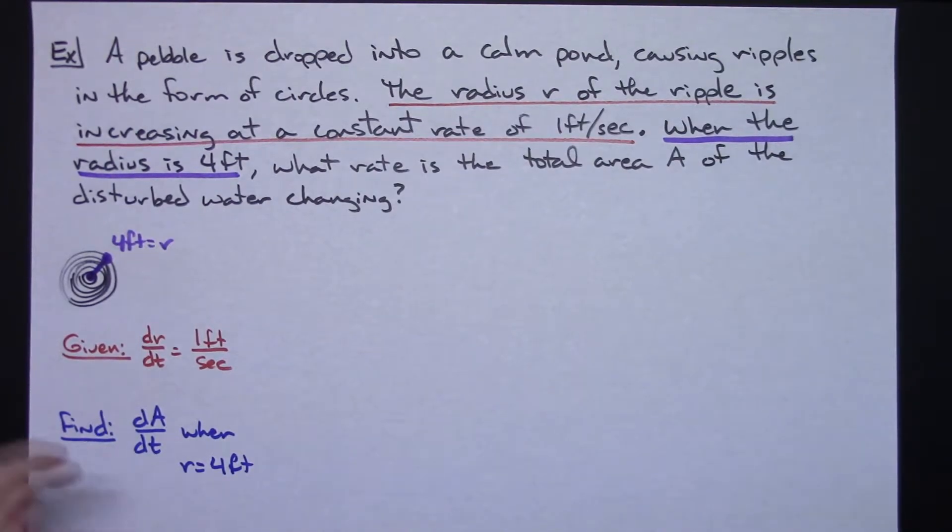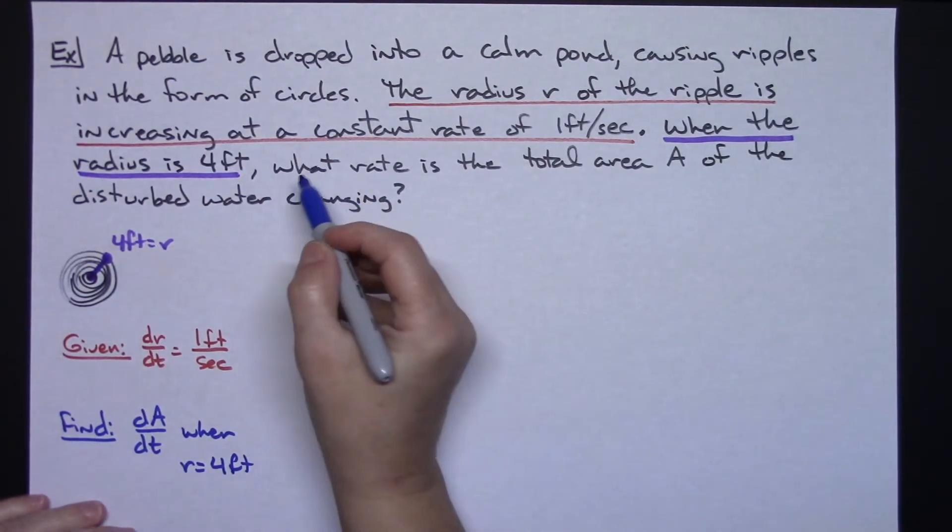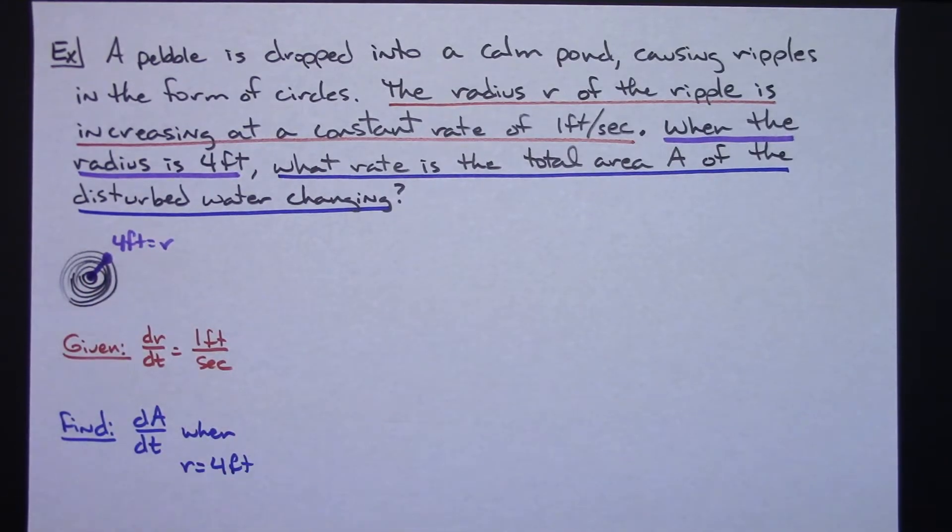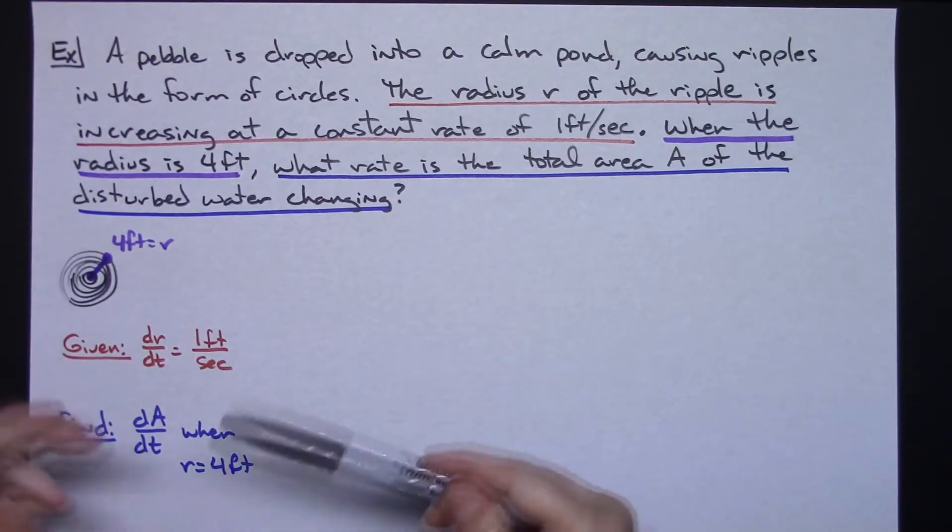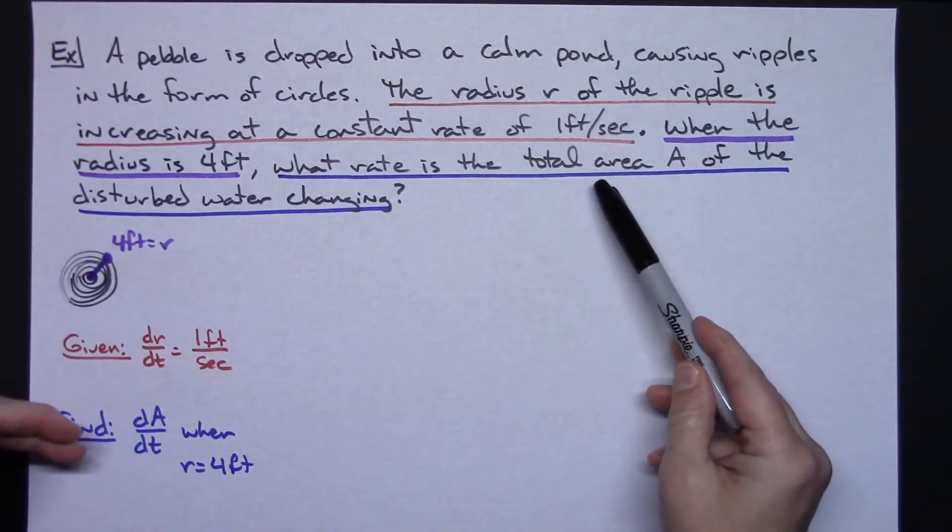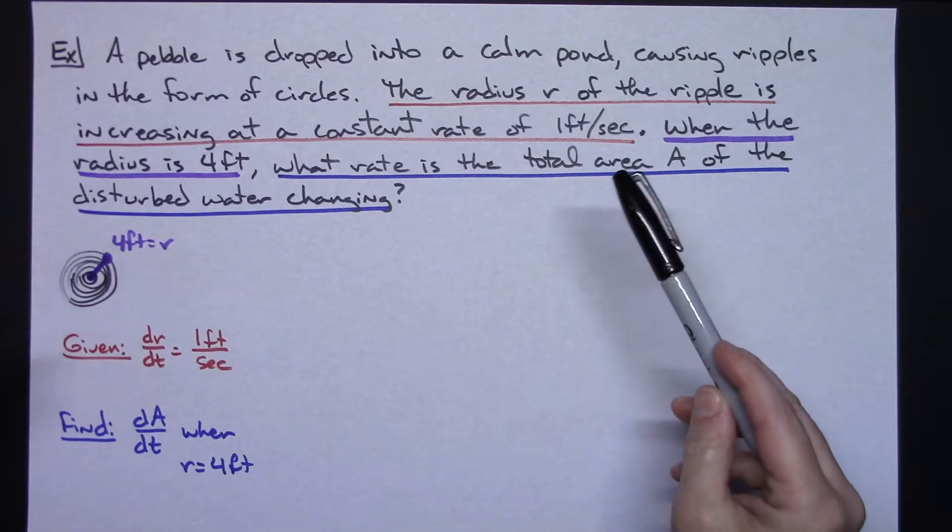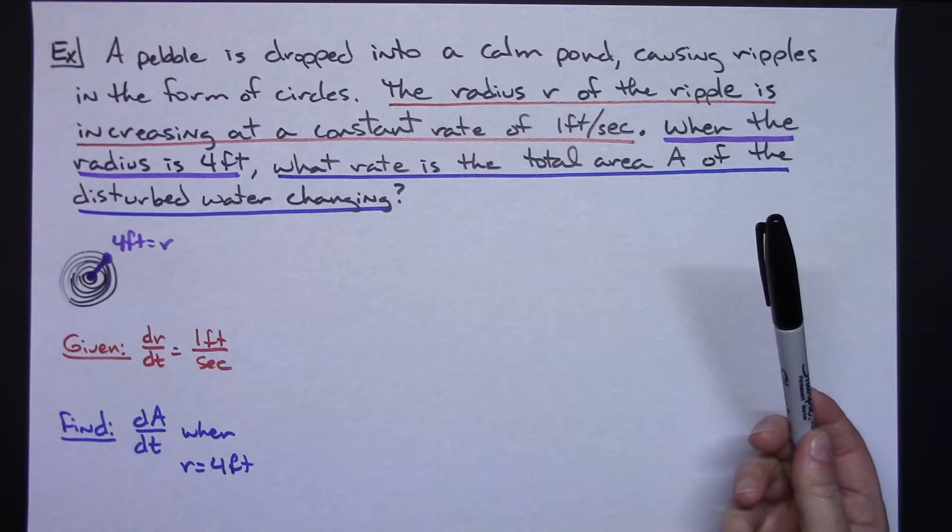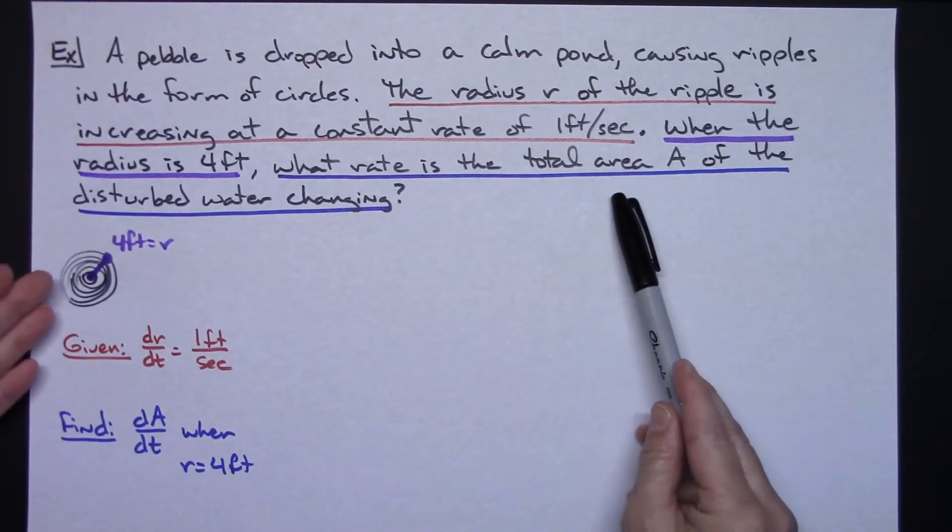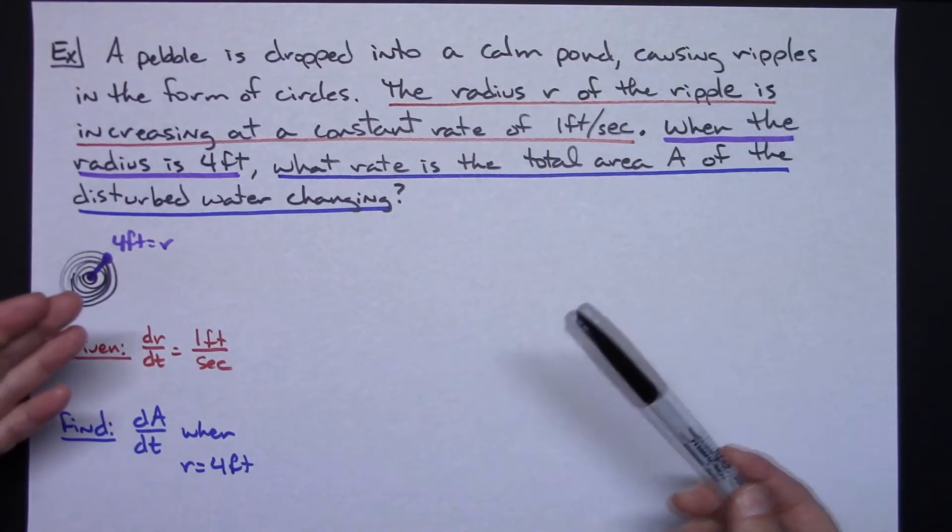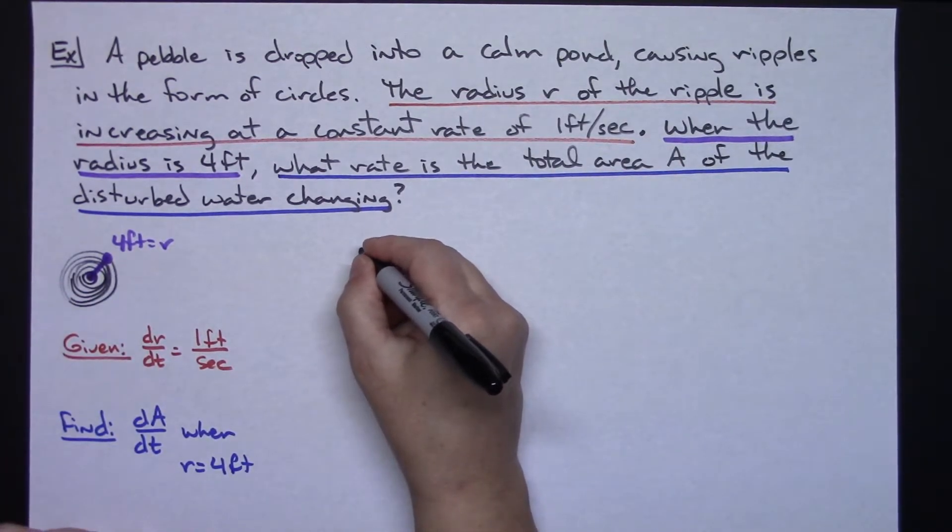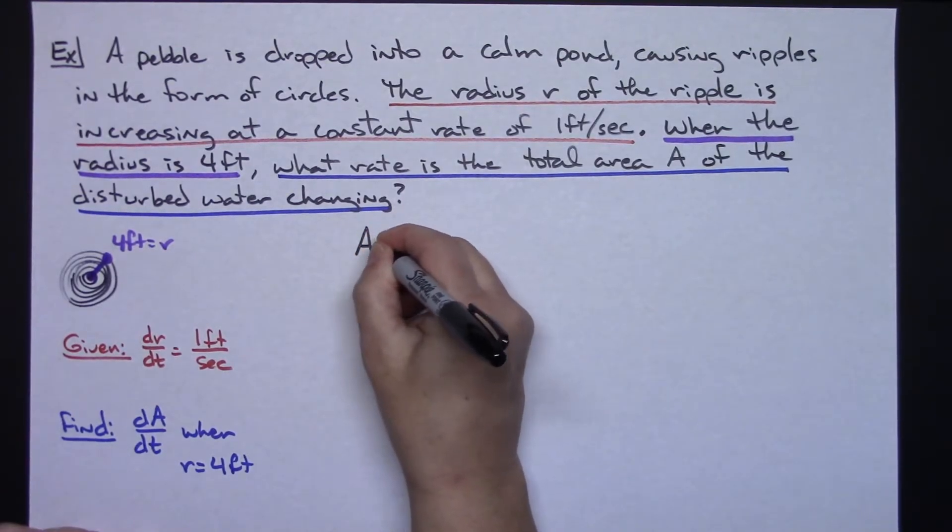There is somewhat of a not the best picture that we could possibly do here, our given and our find. Now I've got to be able to relate all these variables. I'm wanting a total area, the rate of change of the total area and my shape is a circle so you've got to figure out what formula you're going to use. Well if I'm doing area and I've got a circle then I need to have the area of a circle. So I'm going to start with that formula which we all should know as the area equals pi r squared.